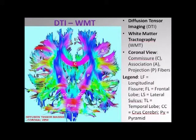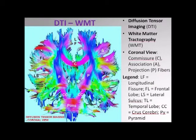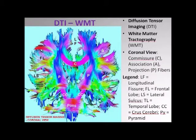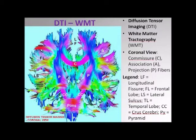This is a coronal view of the brain. You can see that this is one hemisphere here, this is another hemisphere, and this is the longitudinal fissure. This is a commissural fiber here — these colors have been coded by the computer. This band of fibers running down here on either side is an example of a projection fiber. And these fibers that you see here are some association fibers.